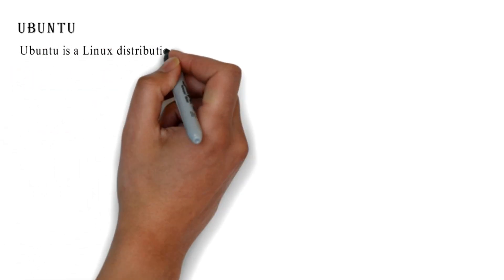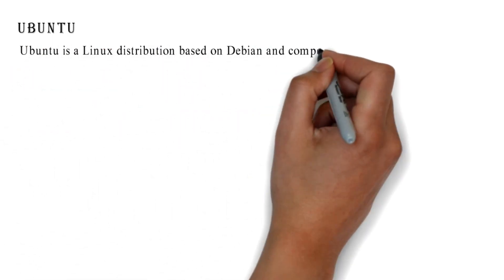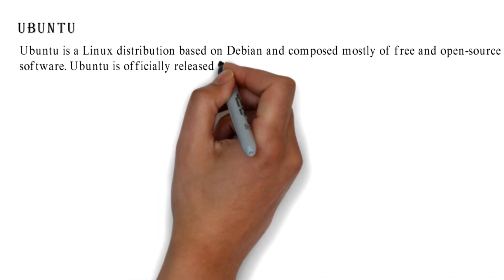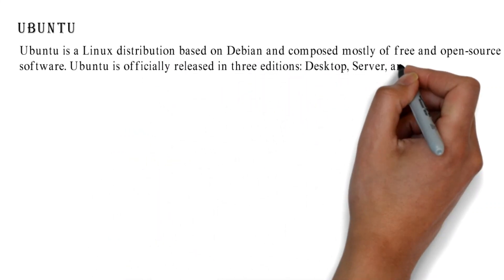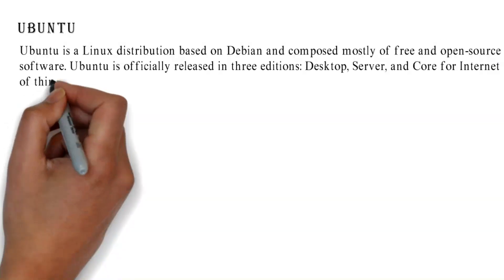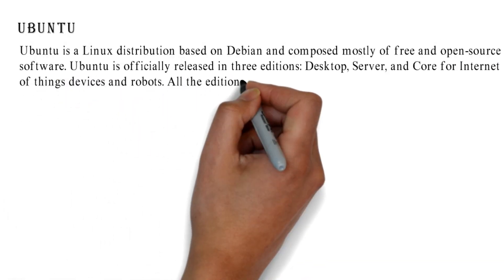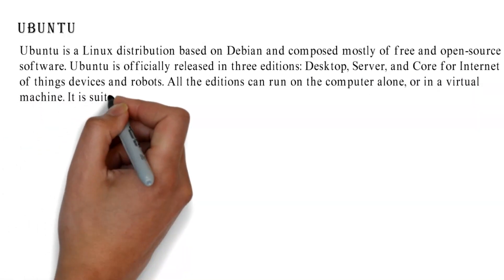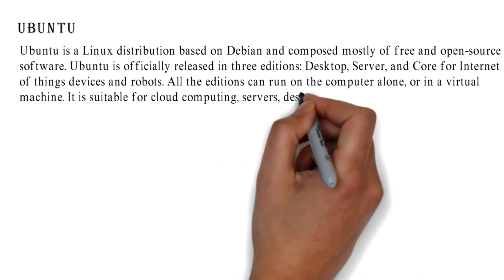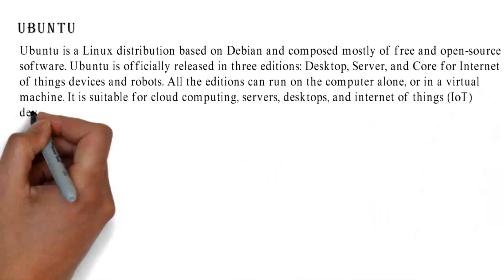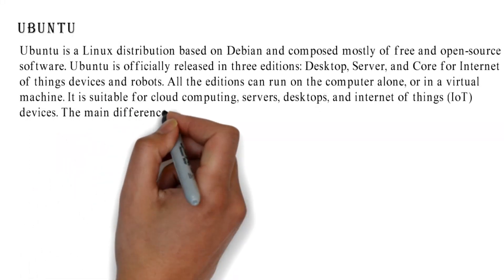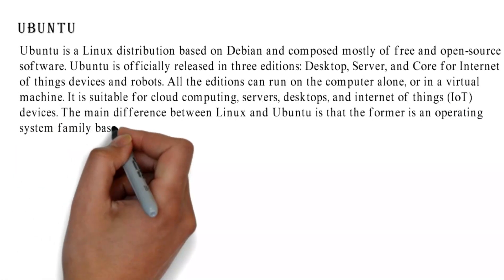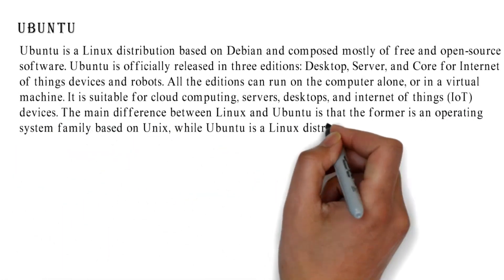Ubuntu is a Linux distribution based on Debian, composed mostly of free and open source software. Ubuntu is officially released in three editions: desktop, server, and core for Internet of Things devices and robots. All editions can run on a computer alone or in a virtual machine. It is suitable for cloud computing, servers, desktops, and IoT devices. The main difference between Linux and Ubuntu is that Linux is an operating system family based on Unix, while Ubuntu is a Linux distribution.